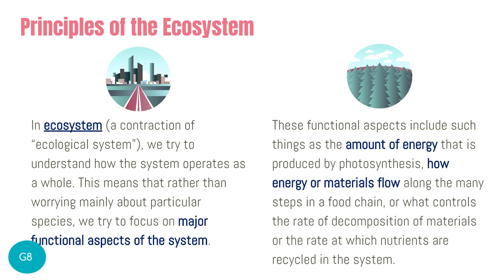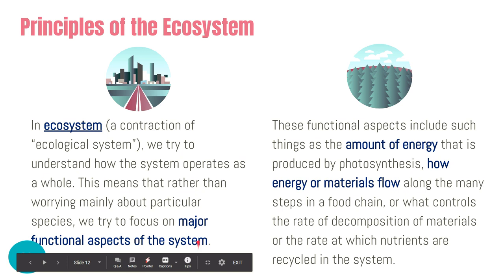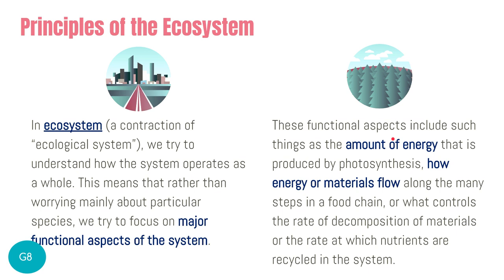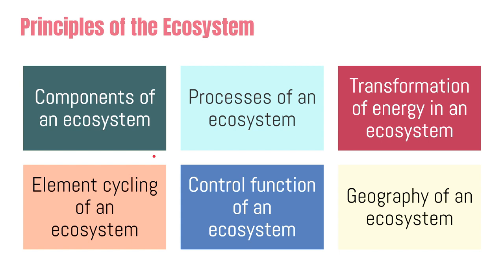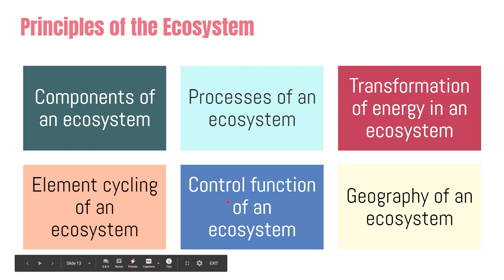The word ecosystem is actually a contraction of two words: ecological system. In an ecosystem, we try to understand how the entire system operates as a whole, focusing on functional aspects — how does the ecosystem function. This includes the amount of energy produced in photosynthesis, how energy or materials flow, what controls the rate of decomposition, and how nutrients are cycled in an ecosystem.